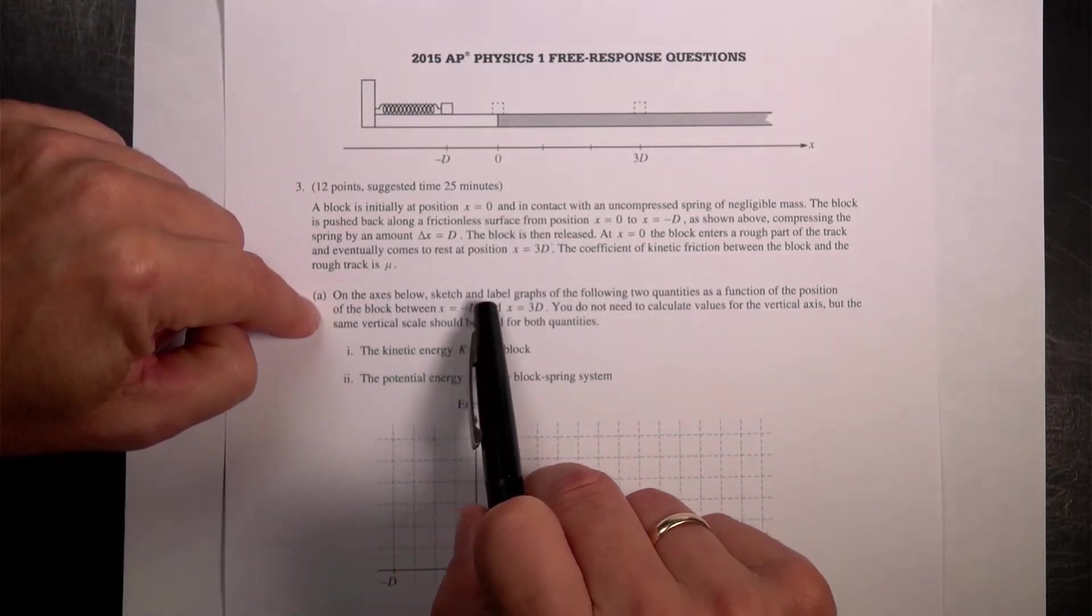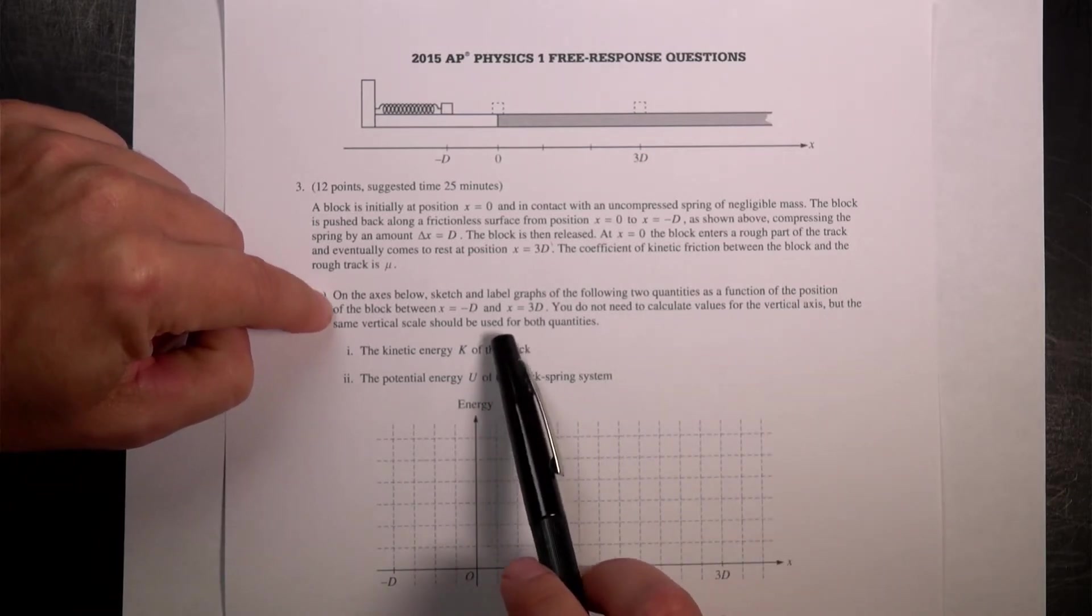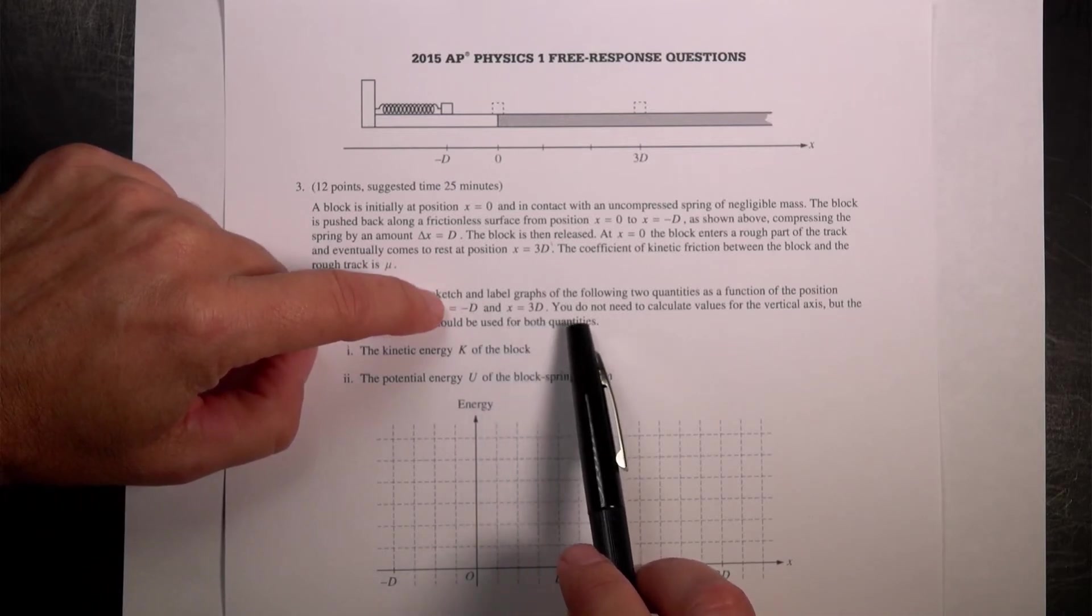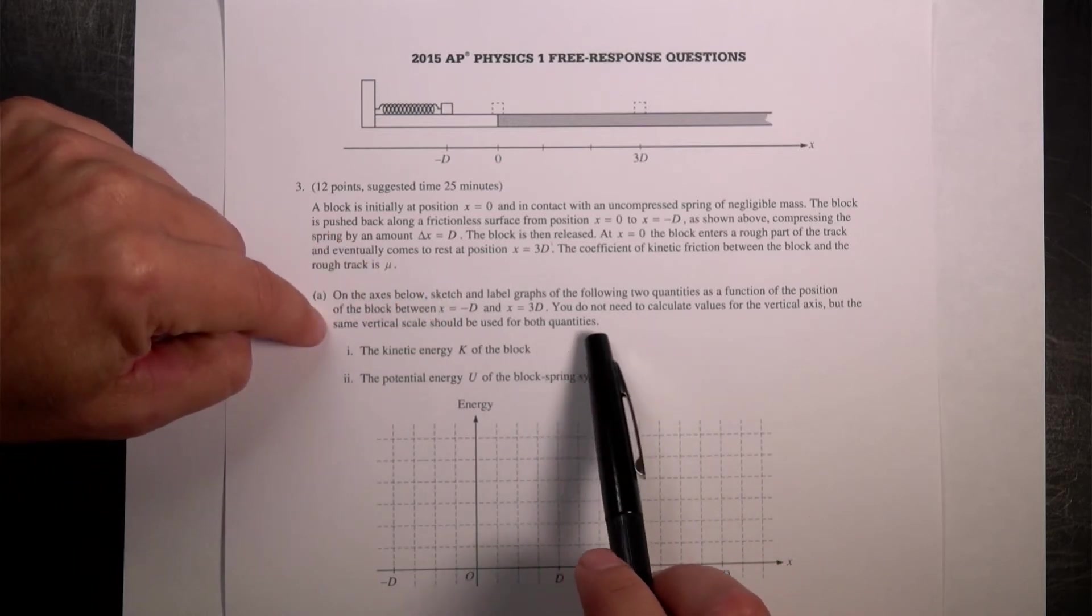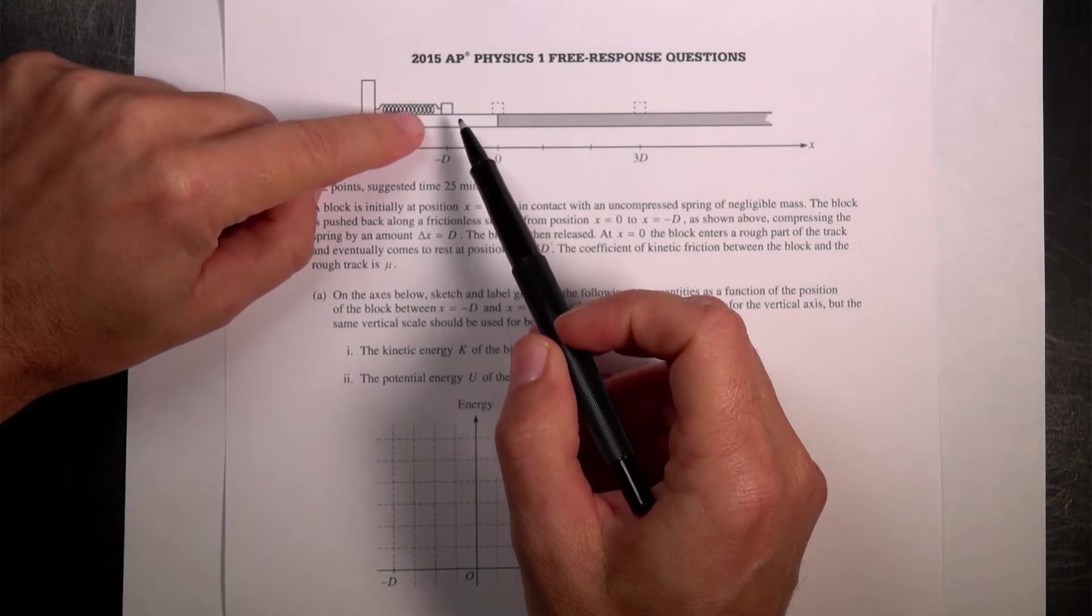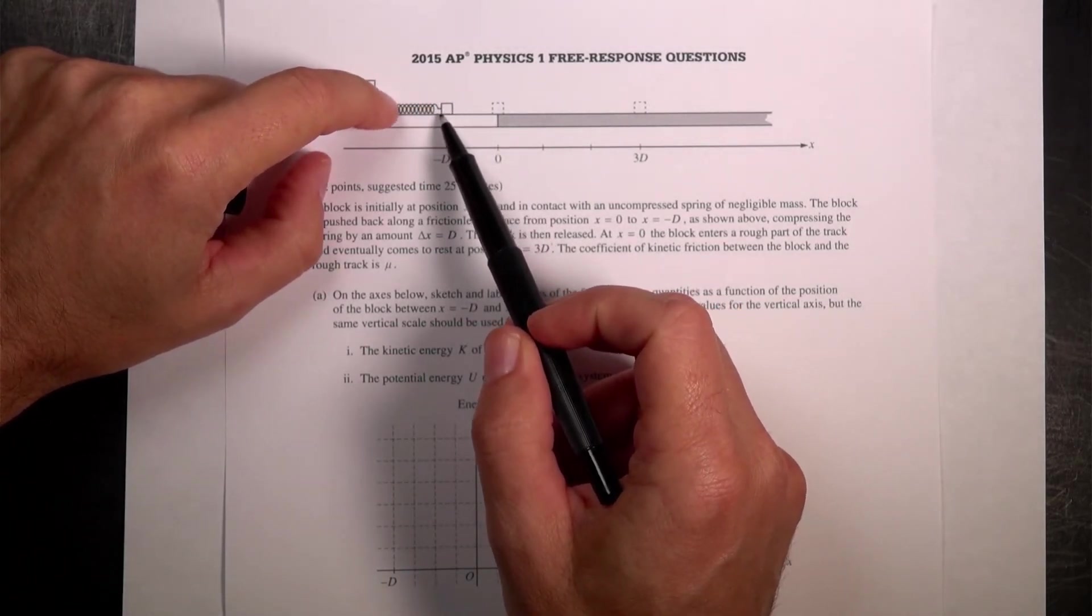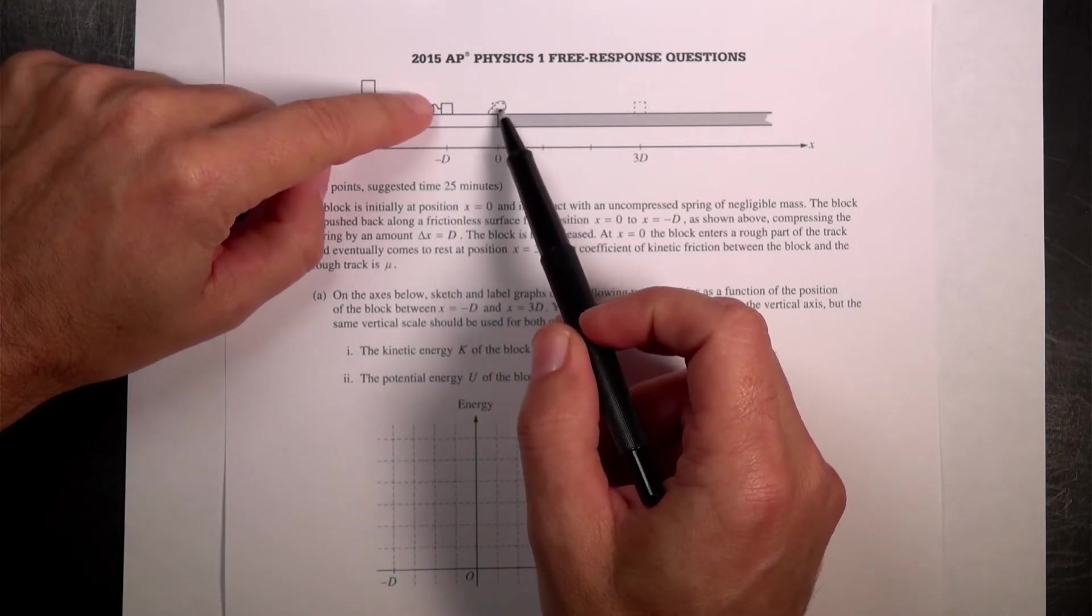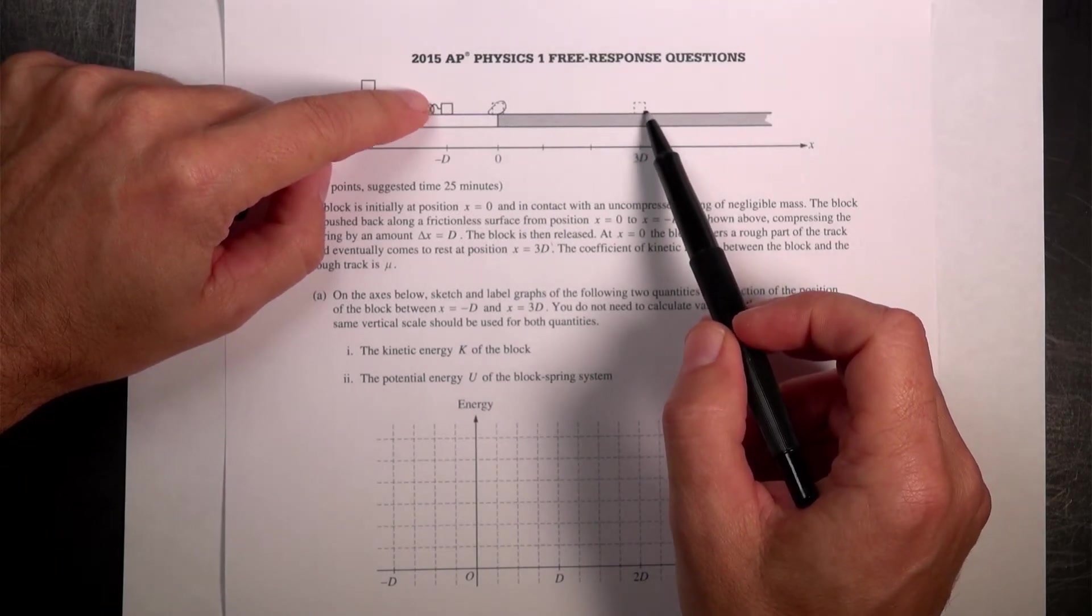On the axis below, sketch and label graphs for the following two quantities as a function of position of the block between x equals negative d and 3d. You do not need to calculate the values for the vertical axis, but the same scale should be used. The kinetic energy of the block. So as I release this, we can think about this in terms of work. The spring is going to do work on the block and increase its kinetic energy to some value up here. And then the block is going to stop over here so it has zero kinetic energy too.